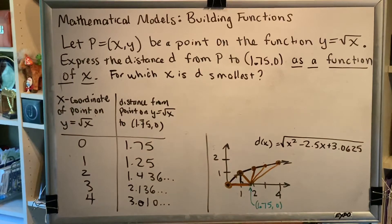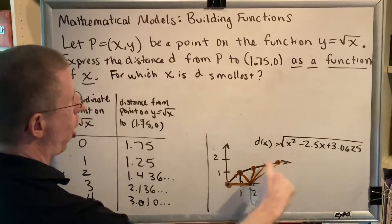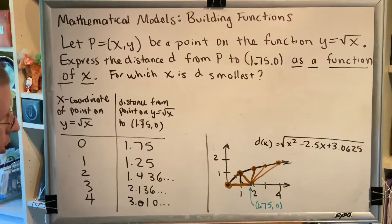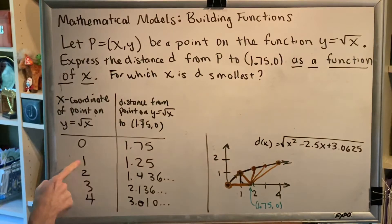This leads me to think, of all the possible places this could sit on the square root function, which one would give the smallest distance? You might be thinking, well, at x=1, you get the smallest distance 1.25.